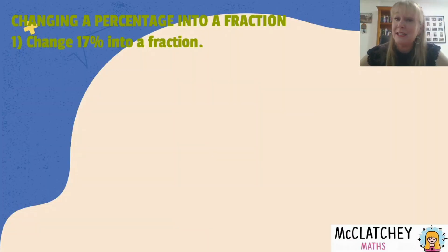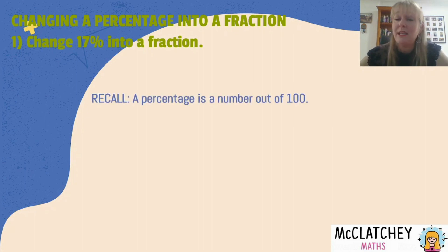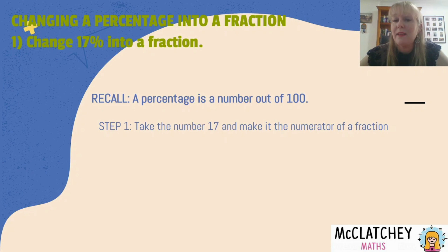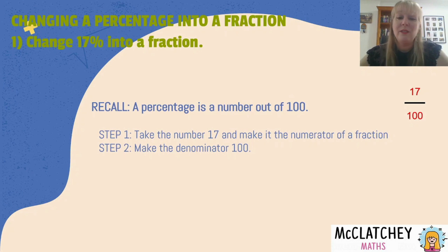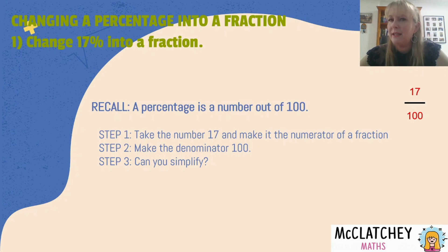Now that we have an idea of what a percentage is, let's do some worked examples. Our first worked example is changing a percentage into a fraction — we're going to change 17% into a fraction. You need to remember that a percentage is a number out of 100. We put a vinculum here, which is the fraction bar, take the number 17 as the numerator — that goes on top — and make the denominator 100. So we've turned 17% into the fraction 17/100. Now, 17 is a prime number and it does not go evenly into 100, so there are no common factors between 17 and 100, meaning we can't simplify this fraction.